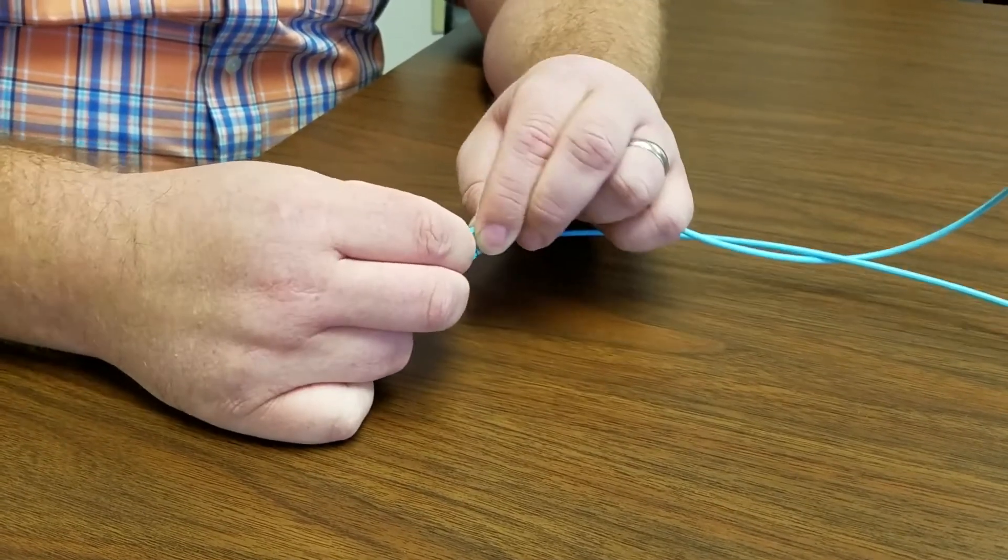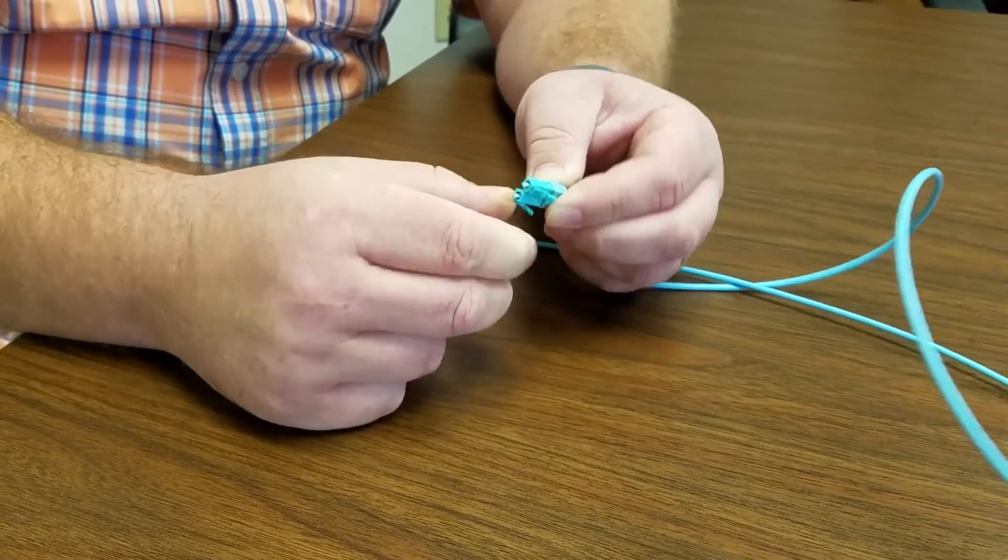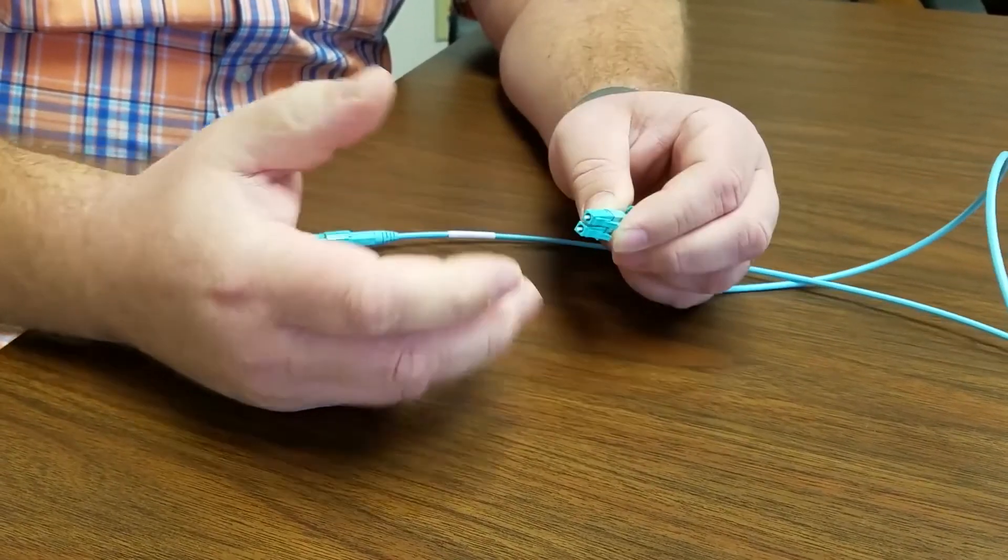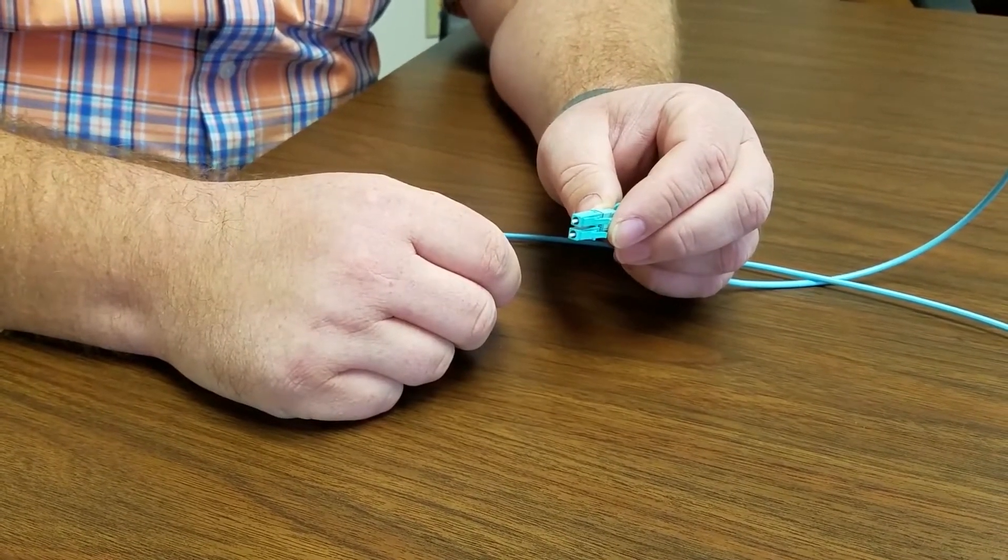You will rotate each connector 180 degrees thusly. That reverses the polarity and changes our cord from an A to B, B to A to an A, A, B, B polarity.